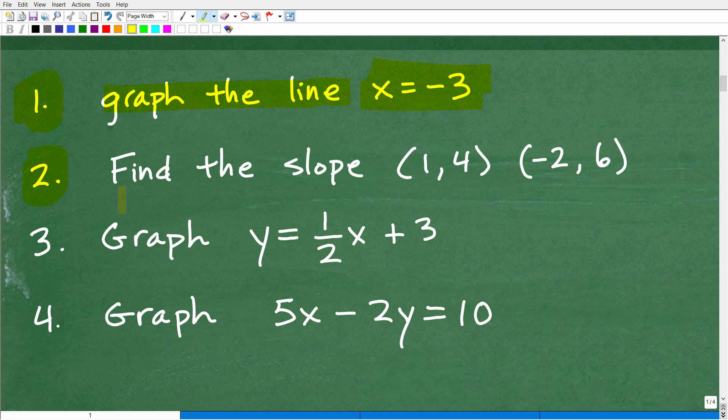Just take a piece of scrap paper out and work on these. Literally will take you about a minute. Our second question is I want you to find the slope between these two points, (1, 4) and (-2, 6). So find the slope between these two points. Number three, I want you to graph this line y is equal to 1/2x plus 3. And then our last question for this little quiz is to graph this line 5x minus 2y is equal to 10.